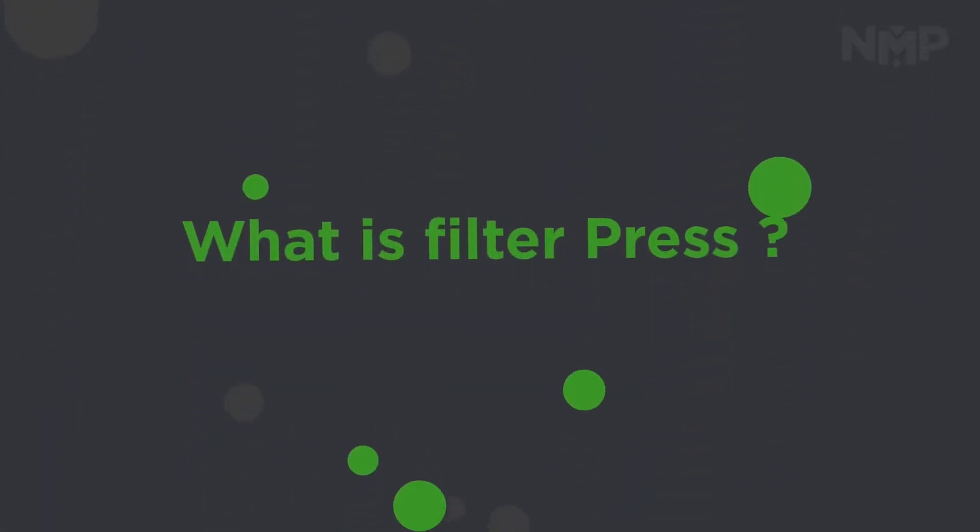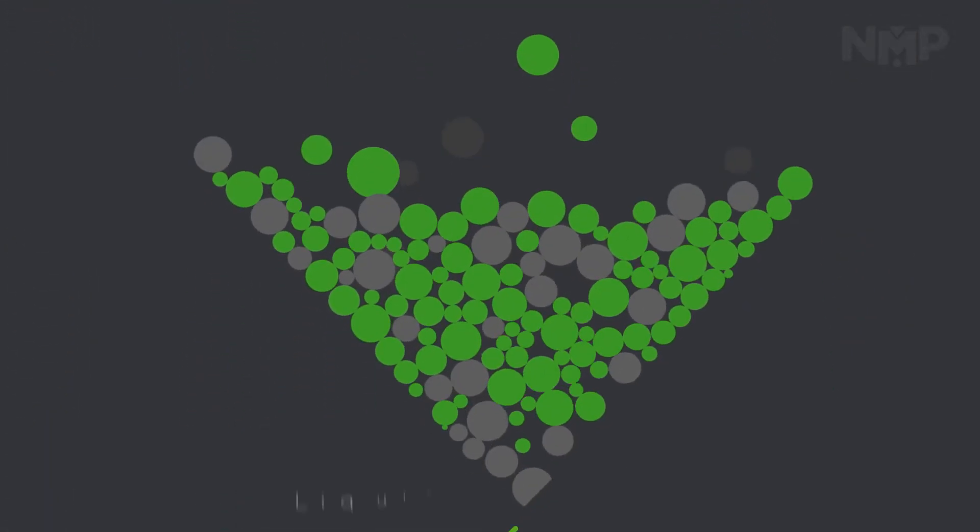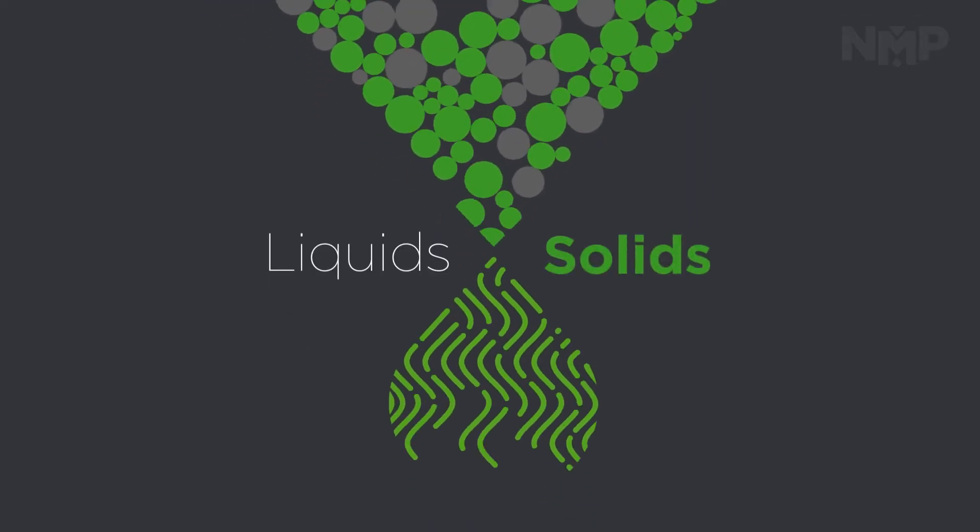What is a filter press? A filter press separates liquids and solids using pressure filtration.